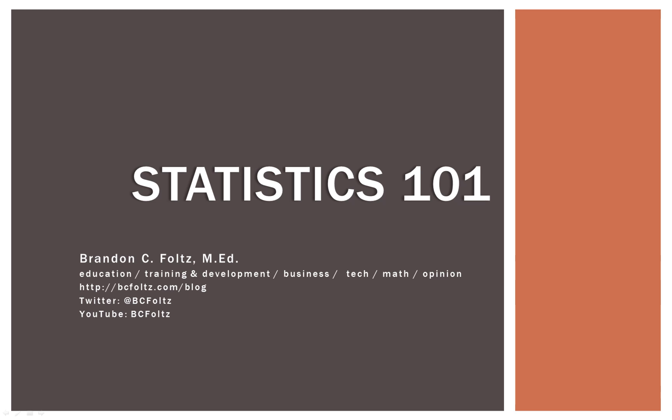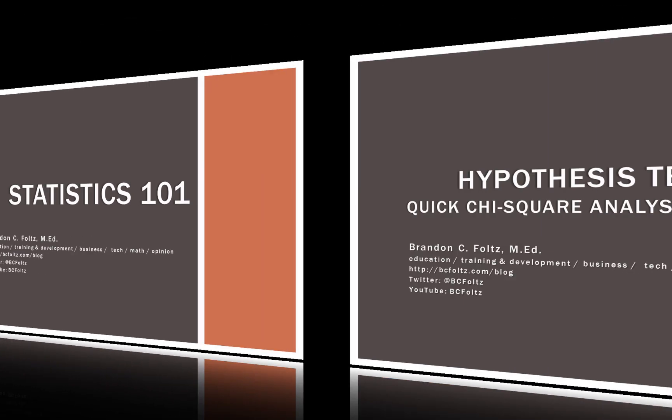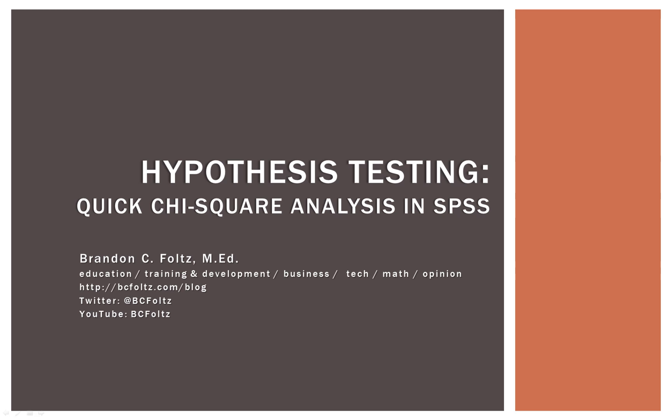Hello and welcome to the next video in my series on basic statistics. This video is an extension of the previous videos on the chi-square. We're going to go into SPSS and learn how to define our variables, how to code them properly, and then how to solve our chi-square using a special technique that allows us to use only the contingency table. Let's go ahead and dive right in.